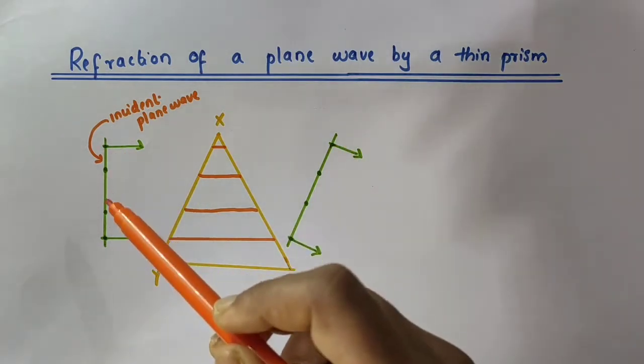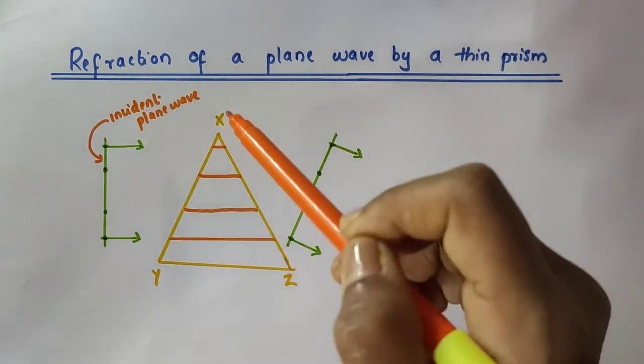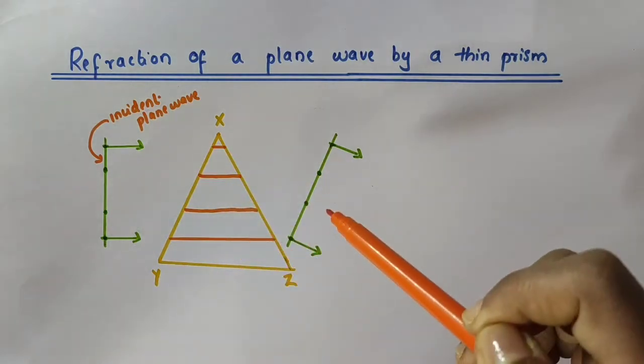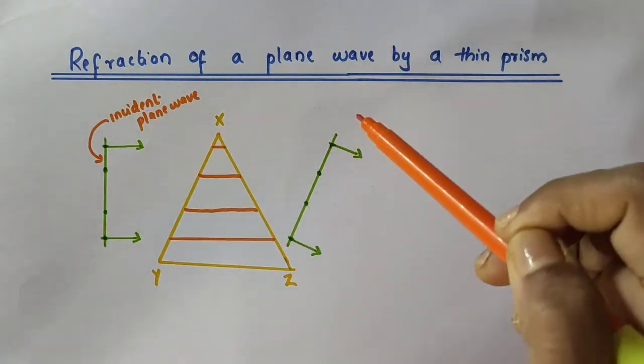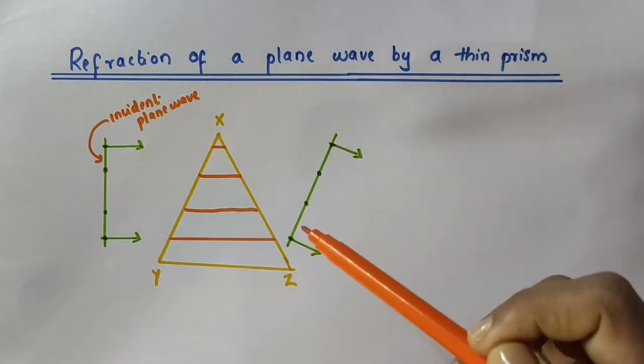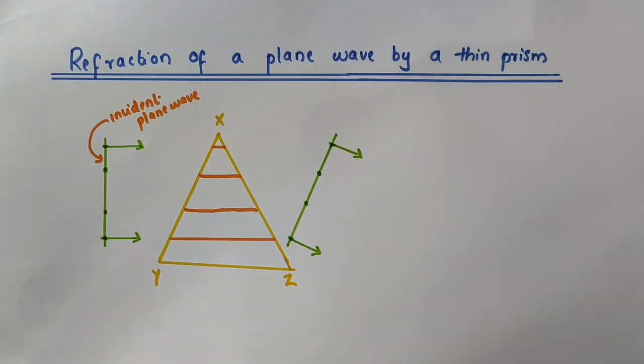When this wave front emerges out, it will be a tilted one. This is the incident plane wave. When it passes through a thin prism, the emerging wave front will be tilted like this.